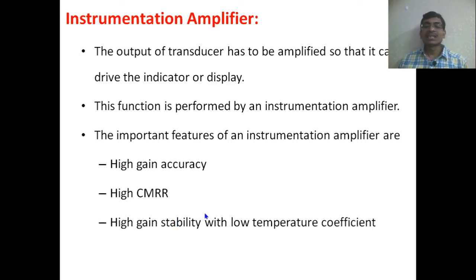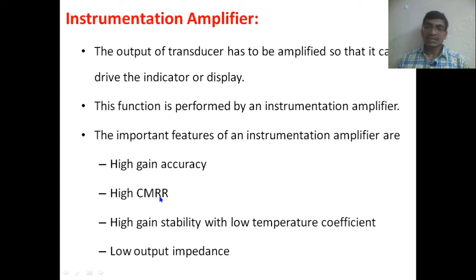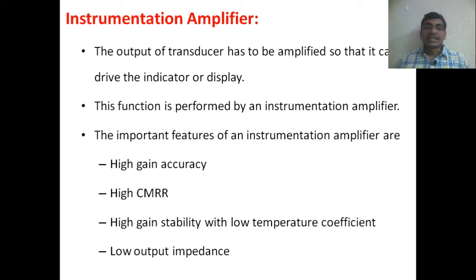The important features of the instrumentation amplifier are: high gain accuracy, high CMRR (common mode rejection ratio), high gain stability with low temperature coefficient, and low output impedance. The gain is very high and accurate. The high CMRR eliminates common-mode input signals. Even when temperature varies, the gain remains stable. With low output impedance, we can drive many devices.